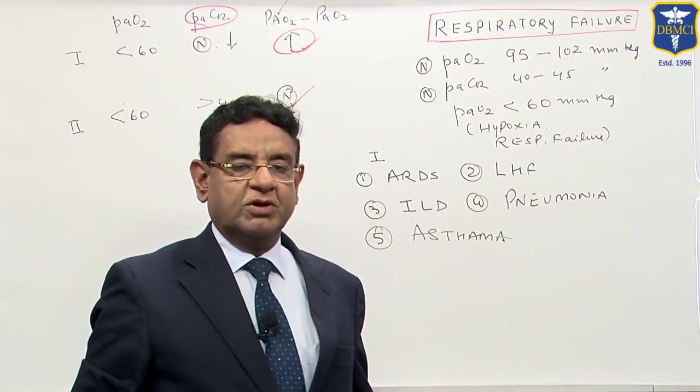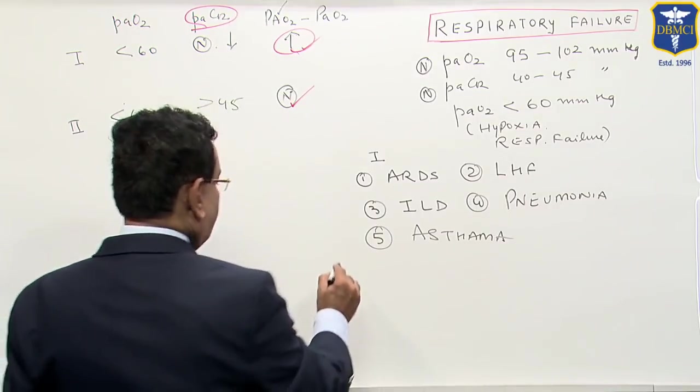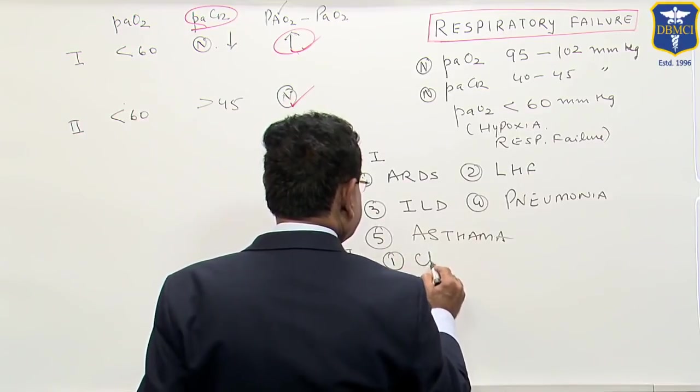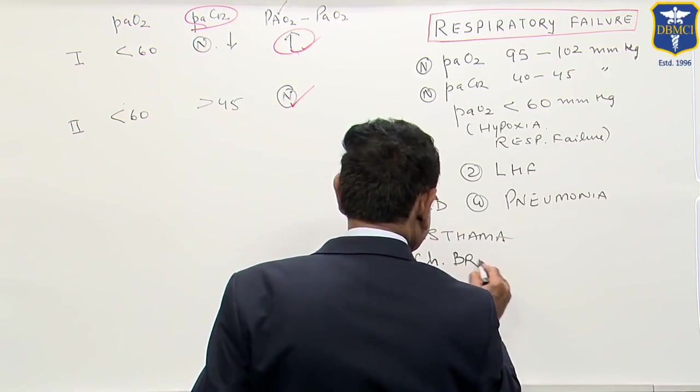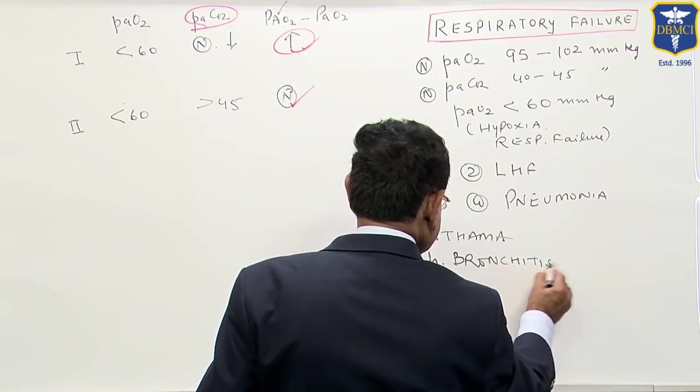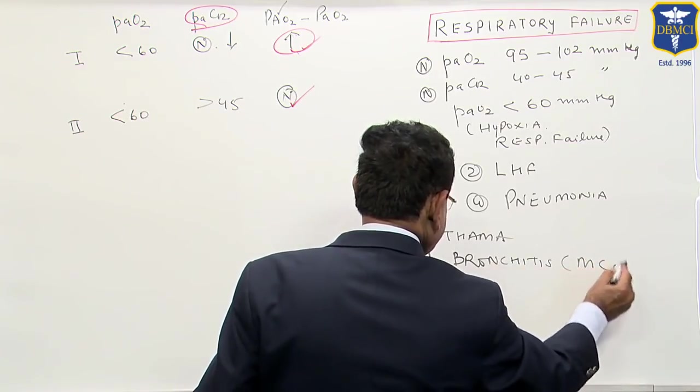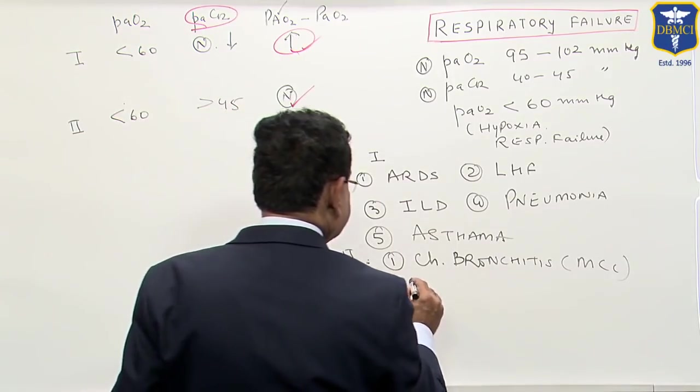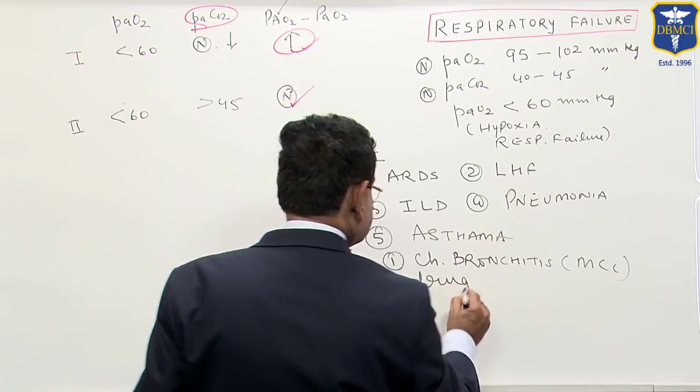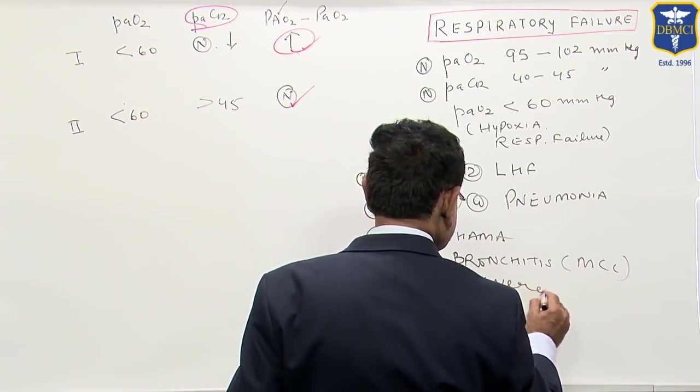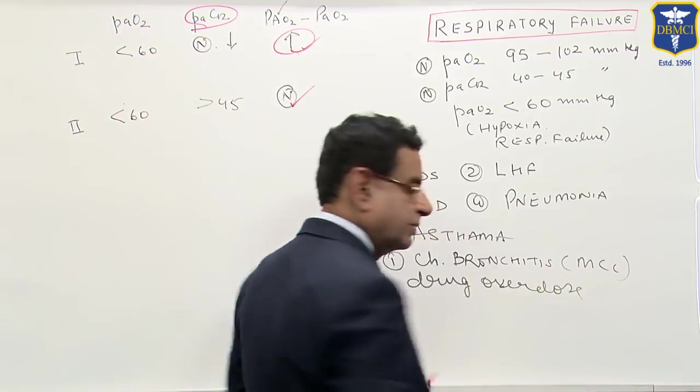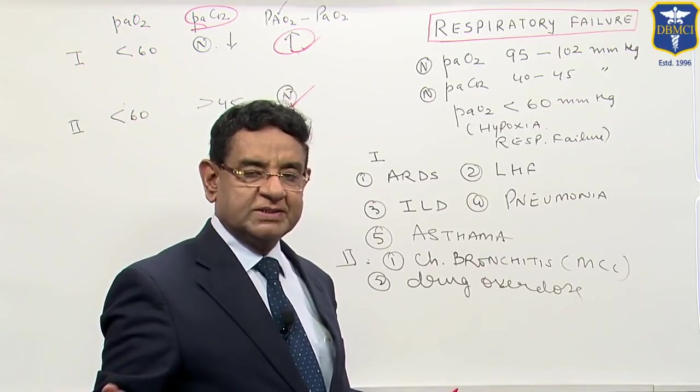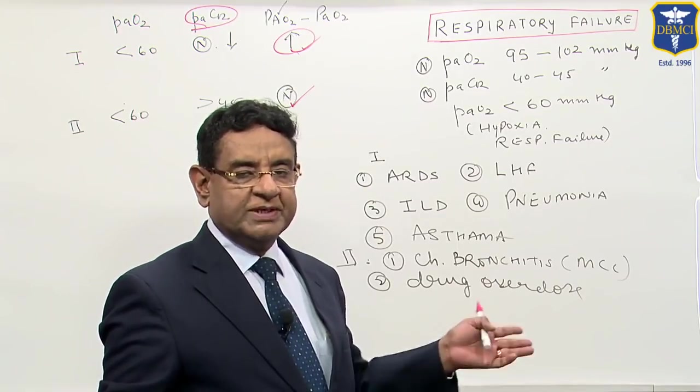Causes of type 2 failure: Chronic bronchitis. This is the most common cause. Then anesthesia drug overdose, where patient in anesthesia, they paralyze all the body muscles and if dose is overdosed, patient have no breathing, patient go into type 2 failure.